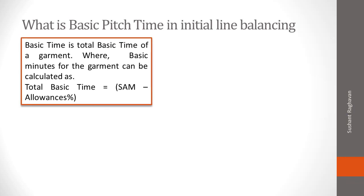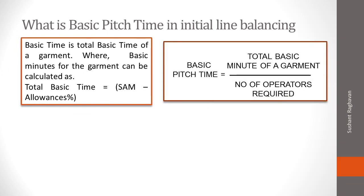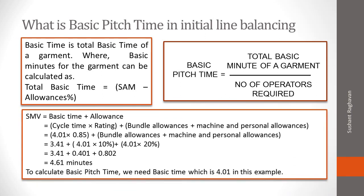In initial line balancing, basic time is the total basic time of a garment, calculated as: Total Basic Time = SAM minus allowances percentage. Basic Pitch Time = Total Basic Minutes of a garment divided by number of operators required. SMV = Basic Time + Allowance = Cycle Time × Rating + Bundle Allowances + Machine and Personal Allowances = 4.01 × 0.85 + bundle allowances + machine and personal allowances = 3.41 + (4.01 × 10%) + (4.01 × 20%) = 3.41 + 0.401 + 0.802 = 4.61 minutes. To calculate basic pitch time, we need the basic time, which is 4.01 in this example.